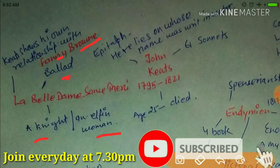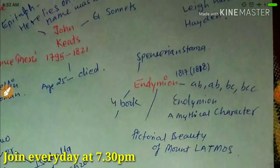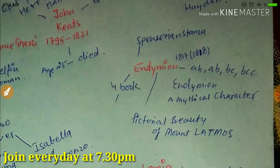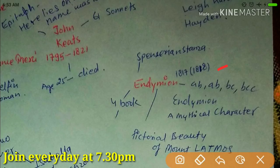This ballad partly shows Keats's own relation to his beloved Fanny Brawne — remember this one, Fanny Brawne. It is a ballad for his beloved; a knight and an elfin woman are shown there. Keats died at the age of 25.